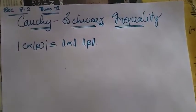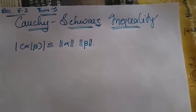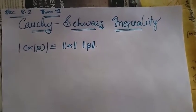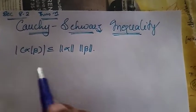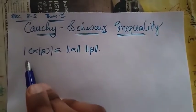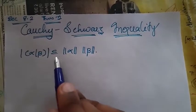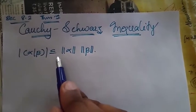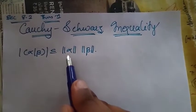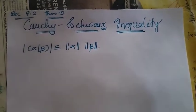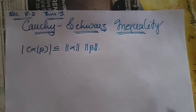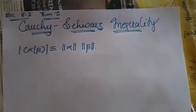Next, we need to prove the Cauchy-Schwarz inequality. The Cauchy-Schwarz inequality states that the inner product of alpha and beta — that is, |⟨α, β⟩| — is less than or equal to the norm of alpha times the norm of beta. We need to prove this.